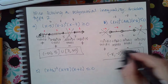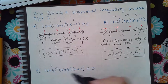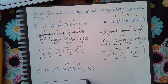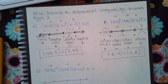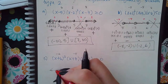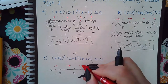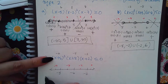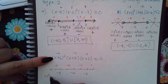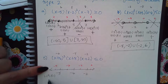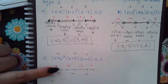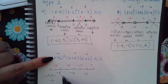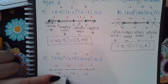Now let's look at the last example. The zeros are negative 6, negative 8, and negative 2, so on the number line: negative 8, negative 6, then negative 2. Test values are negative 9, negative 7, negative 4, and 0. Plugging in negative 9 gives a negative squared times a negative times a negative, which is positive times negative times negative — a big fat positive. Plugging in negative 7 gives a negative squared times a positive times a negative, which is also positive.